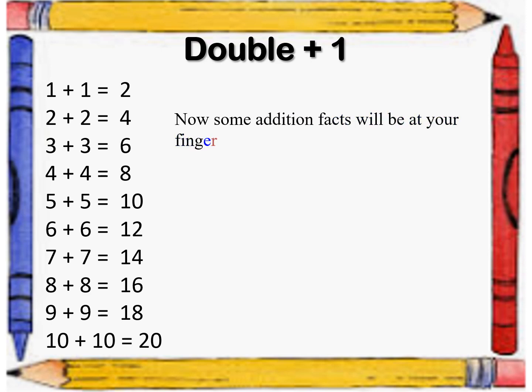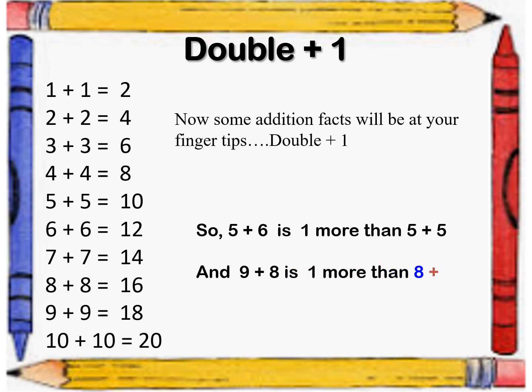When we have learnt the doubles of these digits, adding some numbers will be very easy for us. Now the addition facts will be at your fingertips. We just have to double the smaller number and add 1 to it. Let us take an example. If we have to add 5 plus 6, we will just double the digit 5 which is 10 and add 1 to it, so the answer will be 11. If we have to add 9 plus 8, we will just remember the double of 8 which is 16, and then add 1 more to it, which will give us 17.